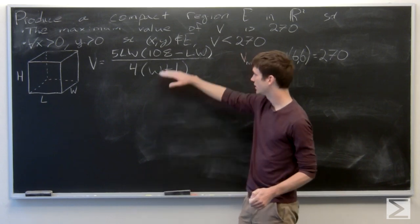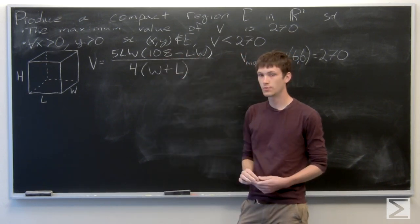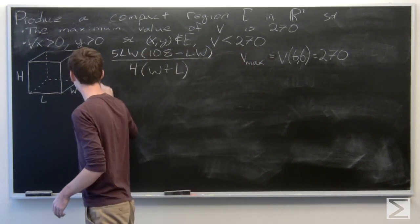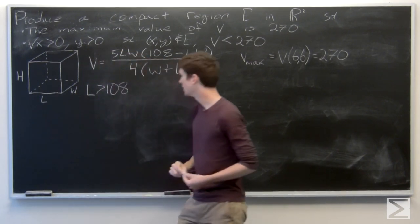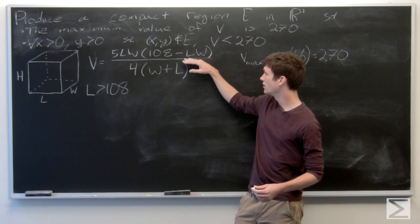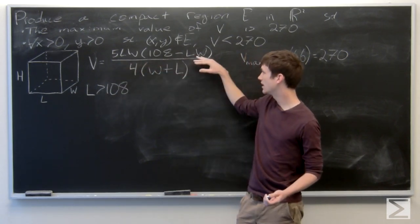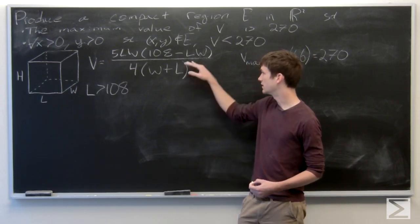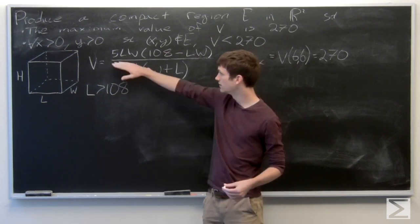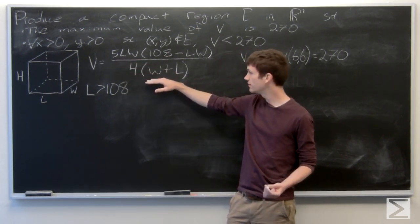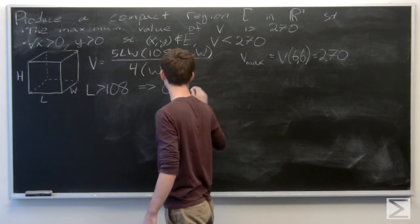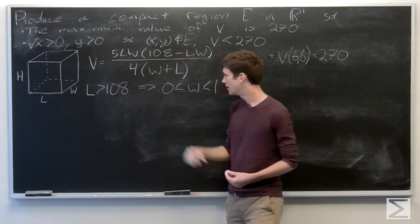Looking at our volume equation, the first thing we might notice is that we have 108 minus L times W. If we were to say that L is more than 108, then looking at our equation, in order to have a positive volume, W is forced to be less than 1. Because if W was 1 or more, then 108 minus LW would be negative, and our volume would also be negative, since L and W are always going to be positive. So this implies that W is between 0 and 1.